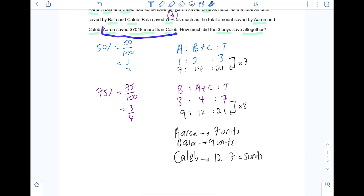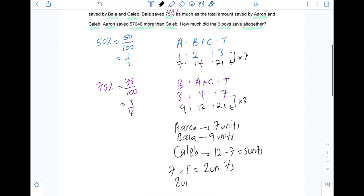So, Aaron saved this much more than Caleb. Aaron, Caleb. 7 minus 5. 2 units. So, 2 units is equals to $7,048.